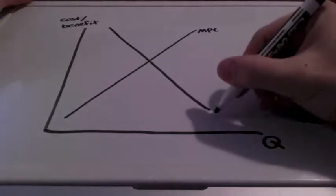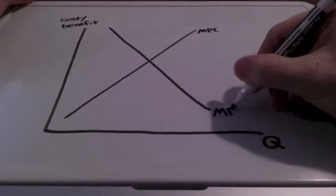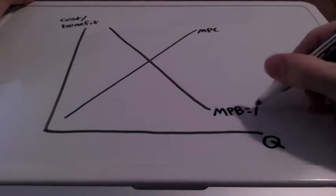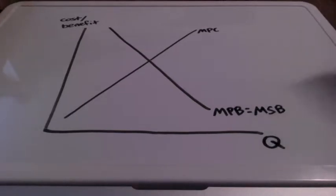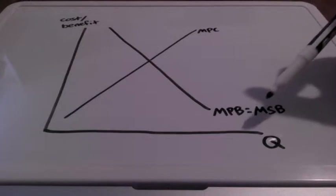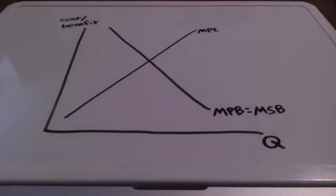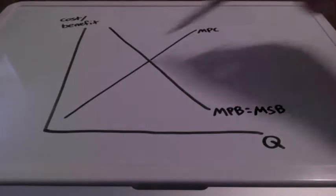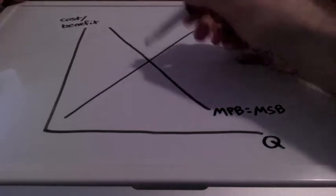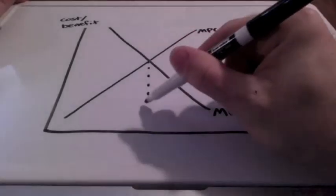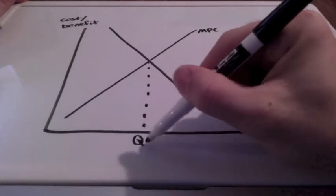We also have a demand curve for externalities, and specifically for negative externalities, we have the marginal private benefit equaling the marginal social benefit. Marginal social benefit is equal to the private marginal benefit plus any external benefits it creates. In other words, marginal social benefit gives the total marginal benefit of the good to society. This intersection where marginal private benefit is equal to the marginal private cost represents the equilibrium quantity.